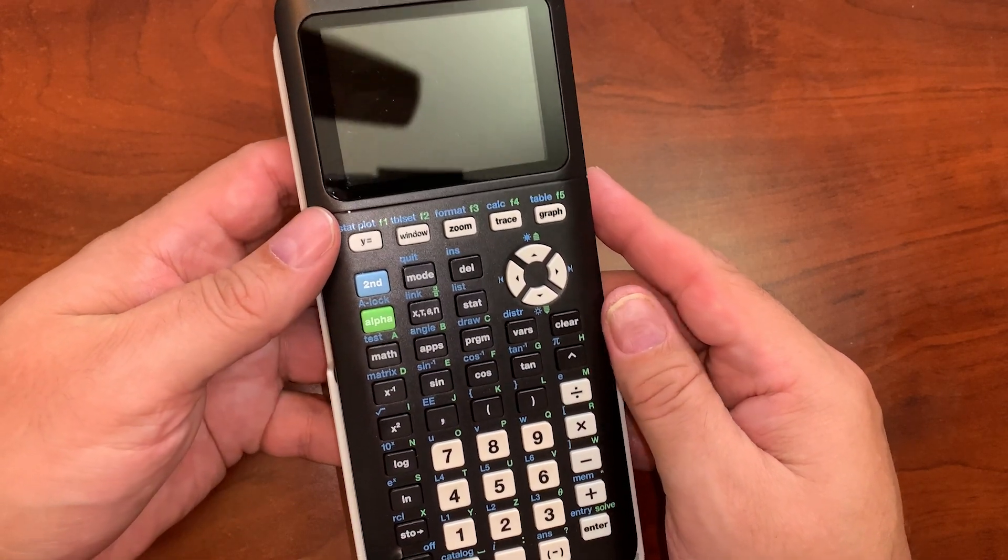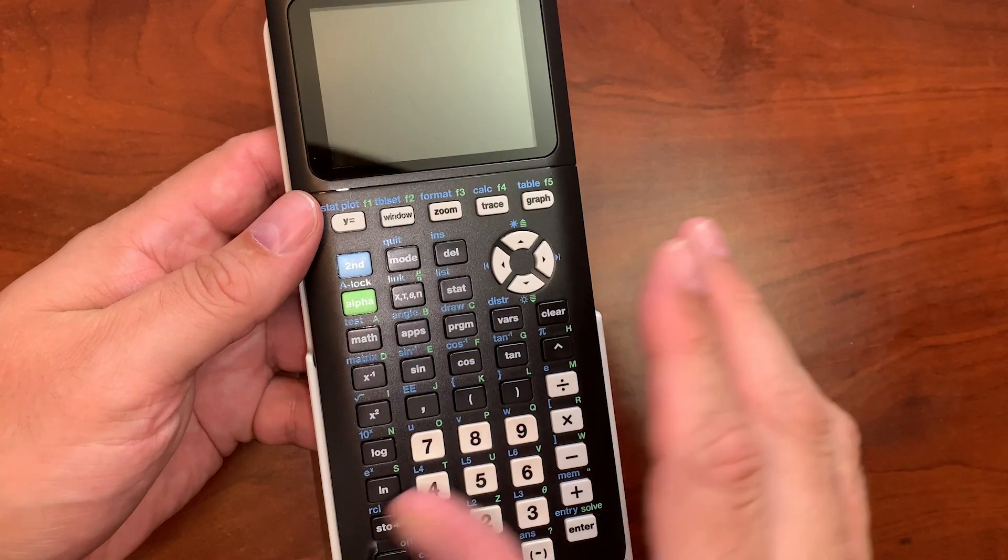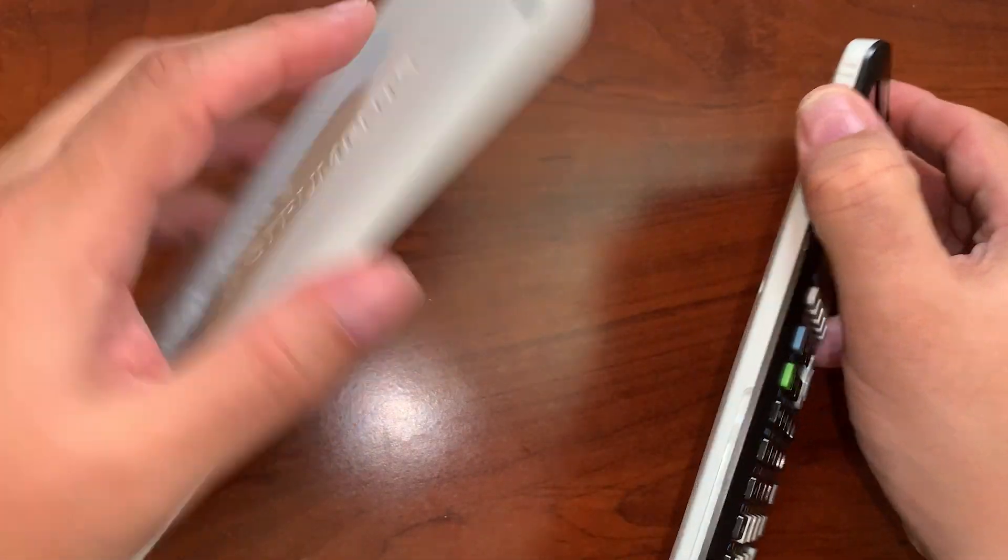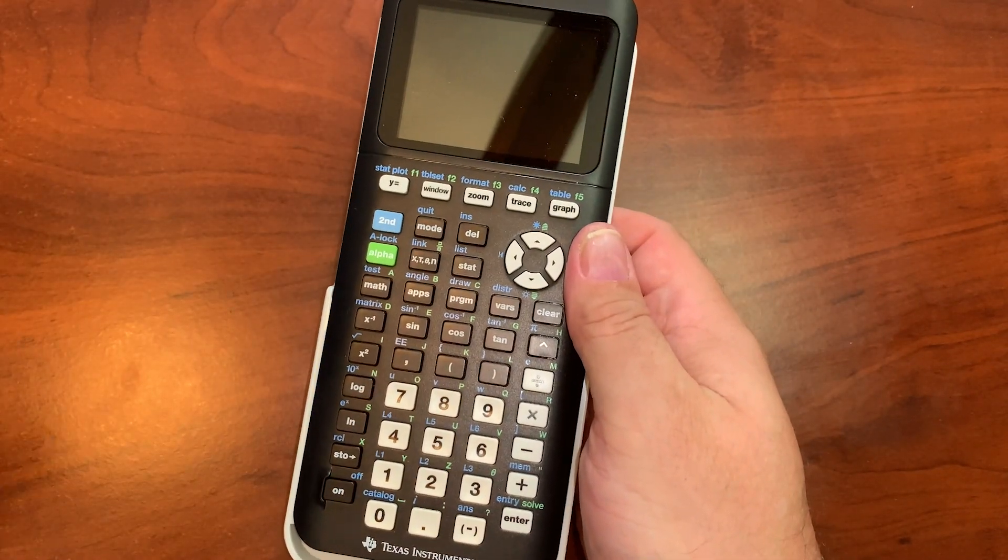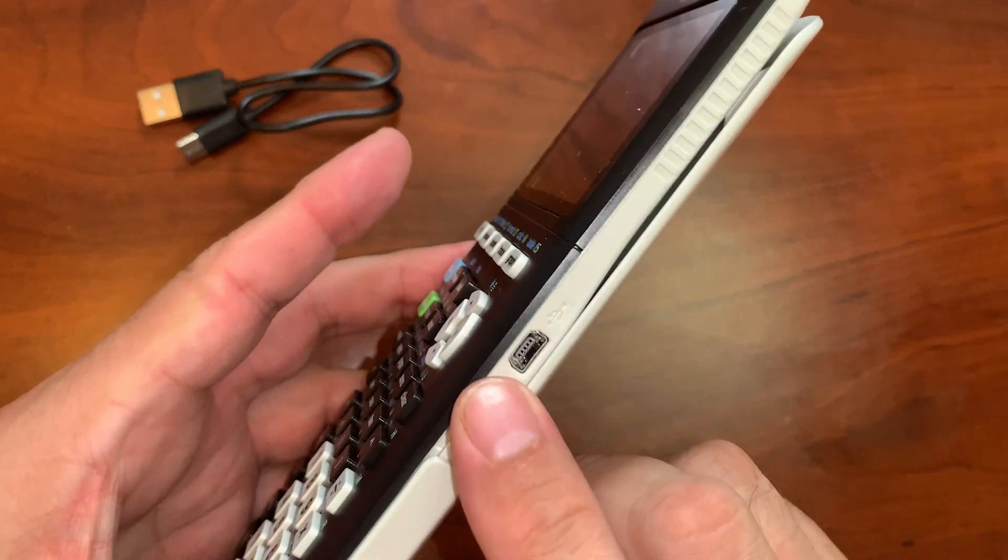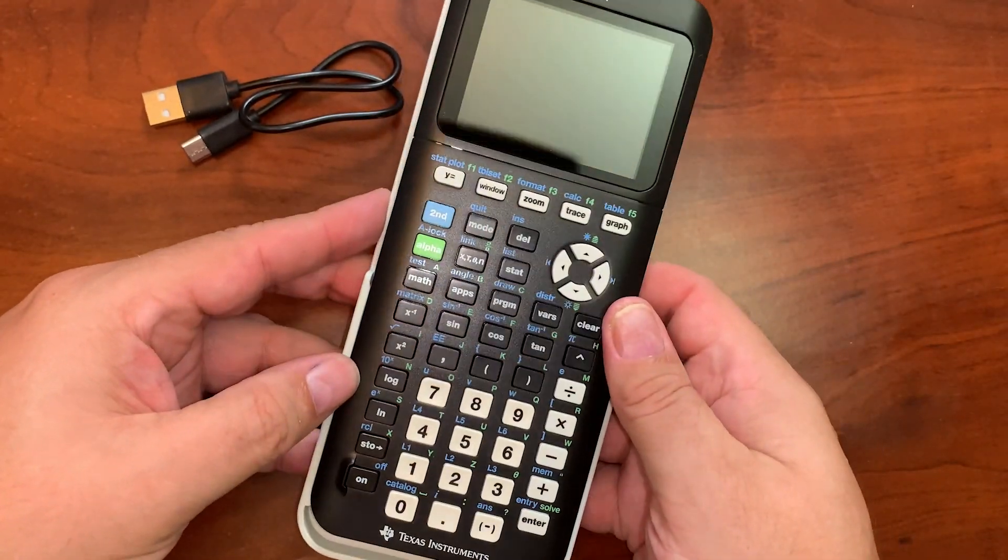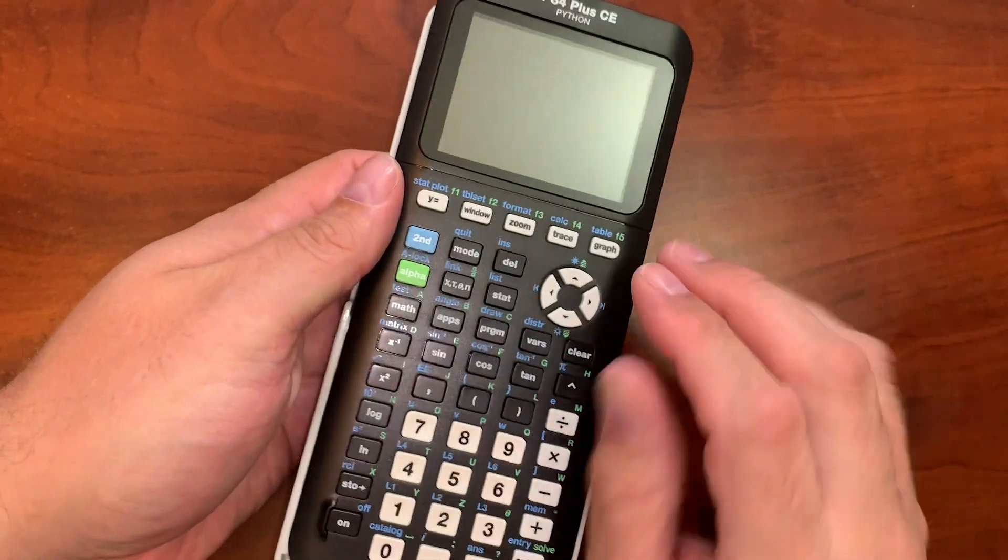It's a basic calculator. You get the calculator and it has this case here that can be used to protect it, and it also comes with a USB charging cable that goes right here on the side. You can charge it right there—it's a micro USB.